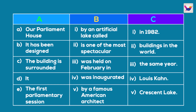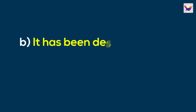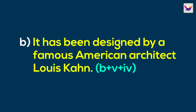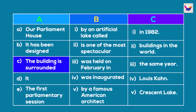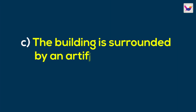In column A, the second line is 'It has been designed.' The complete sentence is: It has been designed by a famous American architect, Louis Khan. The third line is 'The Building is Surrounded.' The word 'surrounded' is used with the preposition 'by.' Matching with column B gives 'by an artificial lake called,' and from column C you can see the name of the lake. The complete sentence is: The building is surrounded by an artificial lake called Crescent Lake.